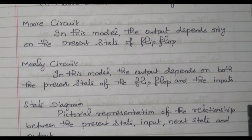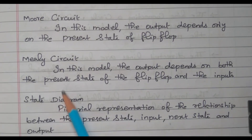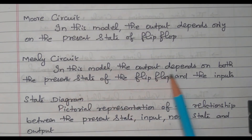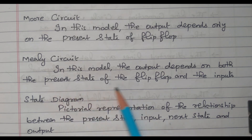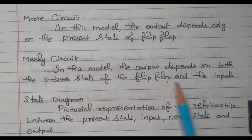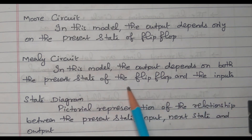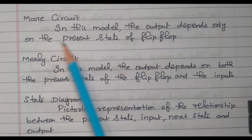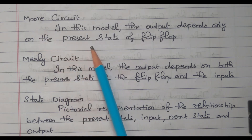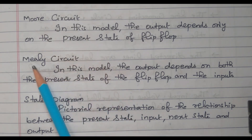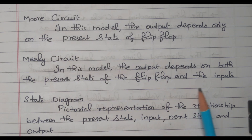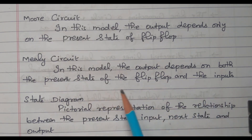In the case of the Mealy circuit, in this model, the output depends on both the present state of the flip-flop and the input. So the output depends upon the input as well as the present state of the flip-flop. To summarize: the Murray circuit output depends only on the present state; the Mealy circuit output depends upon the input as well as the present state of the flip-flop.